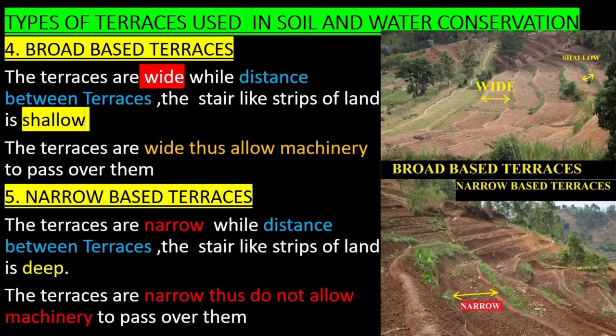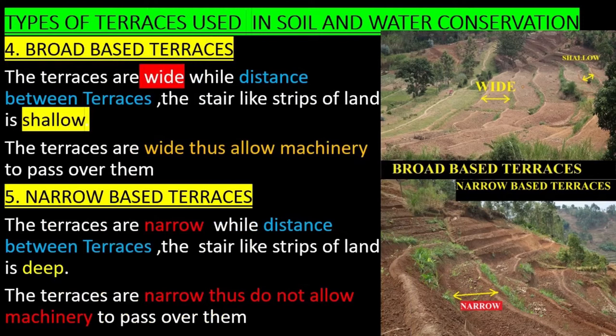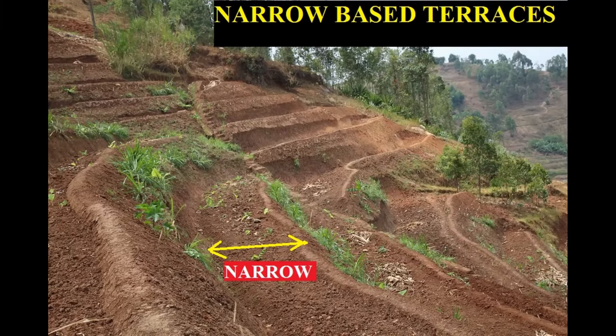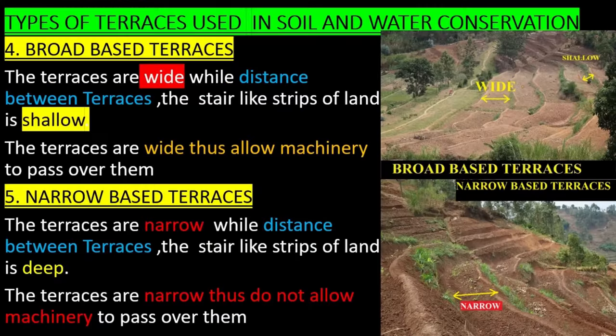Broad-based terraces are wide while the distance between terraces is shallow. The terraces are wide thus allow machinery to pass over them. Narrow-based terraces are narrow while the distance between terraces is deep. The terraces are narrow thus do not allow machinery to pass over them.